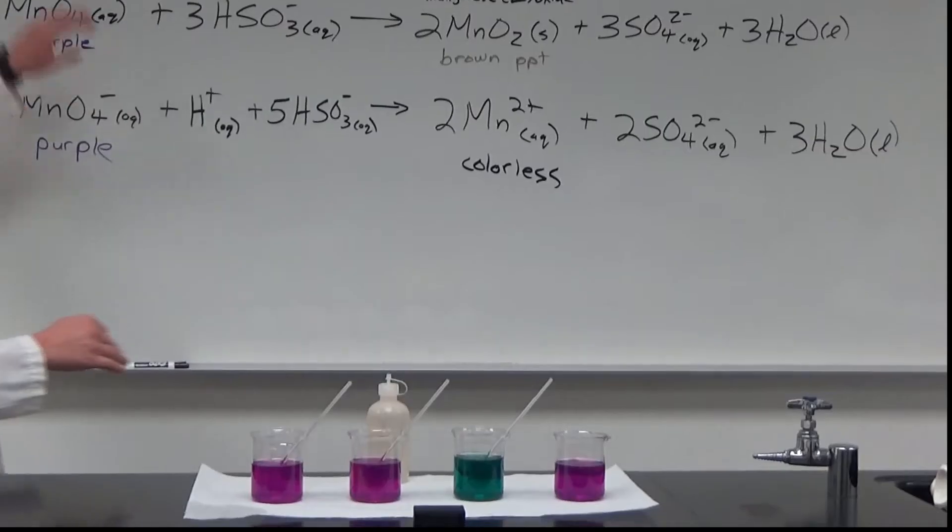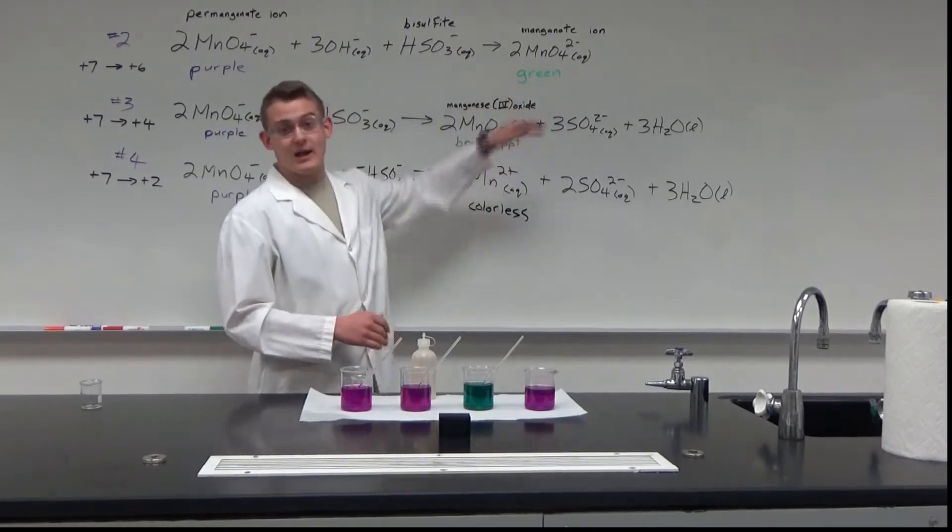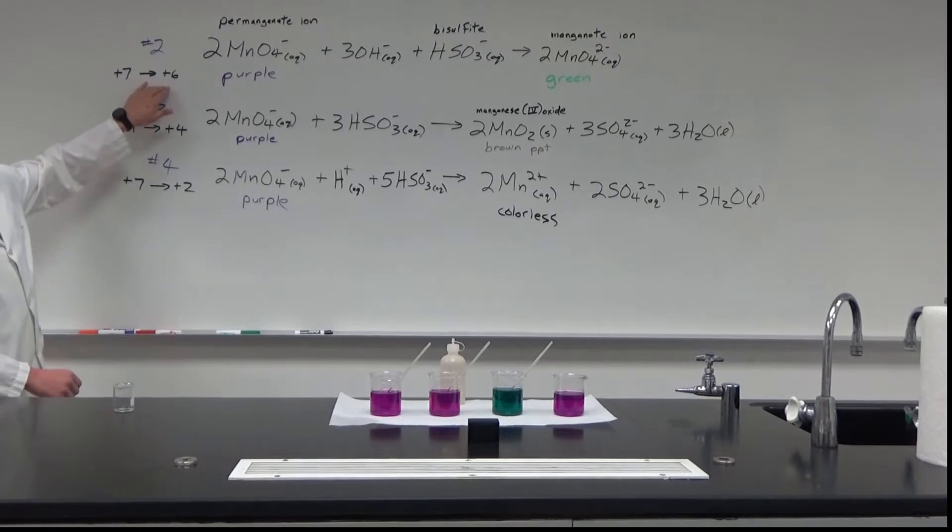What we did there was we changed the permanganate purple ion, and we changed it into the manganate ion, which is green. So we went from the oxidation number plus seven to plus six.